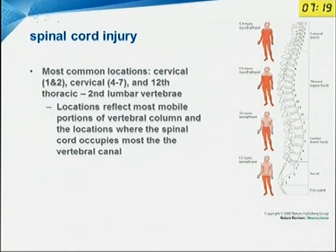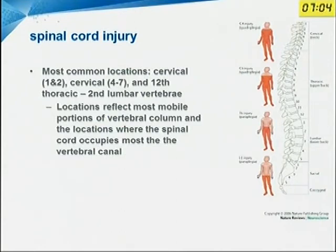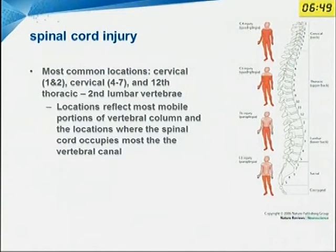The most common locations are cervical spine C1 to C2, and in the subaxial spine between C4 and C7, and at the thoracolumbar junction from the 12th thoracic vertebra to the 2nd lumbar vertebra. These locations reflect the most mobile portions of the vertebral column and where the spinal cord occupies most of the vertebral canal, so the chance of injury at these areas is very high.